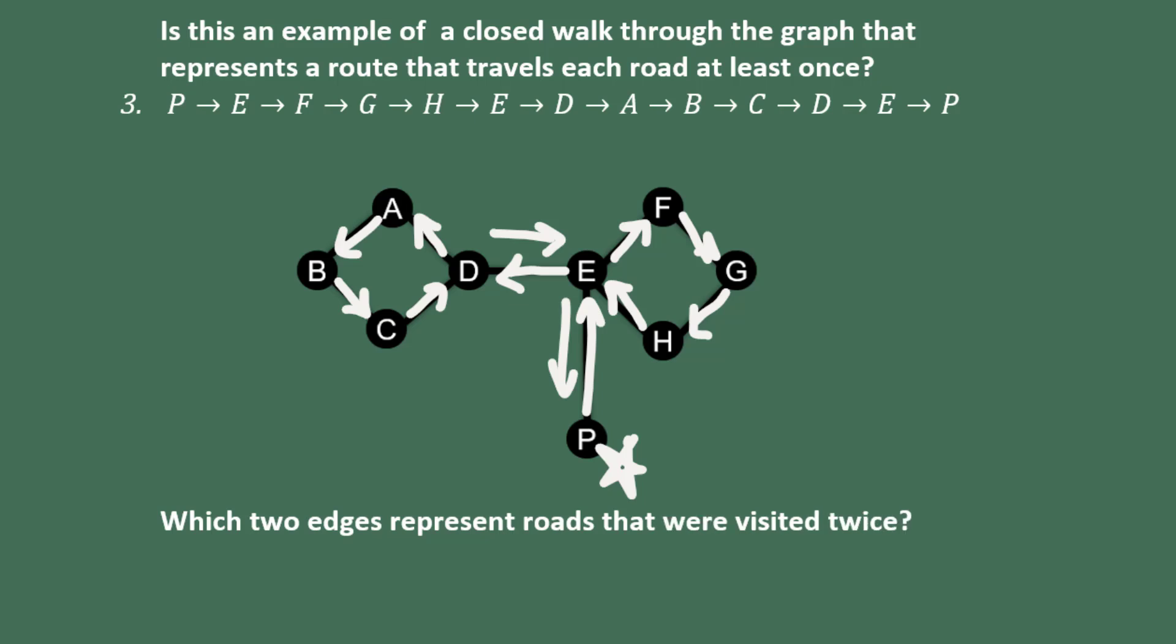So in the context of our mail delivery problem, which two edges represent roads that were visited twice? Those would be D to E and E to P. So our mail delivery person had to do a little bit of backtracking. Sometimes this is avoidable and sometimes it's not. In this context, our goal is always to have as little backtracking as possible.